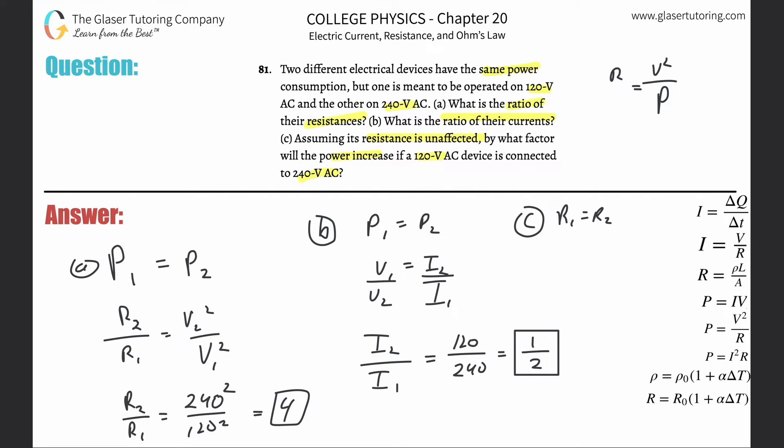If I call this R1, then this would be V1 squared over P1, and this would be V2 squared over P2. Doesn't matter how you solve this for the ratio—I'm going to solve it for P2 over P1.